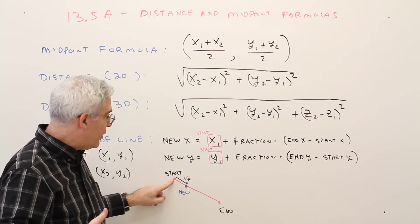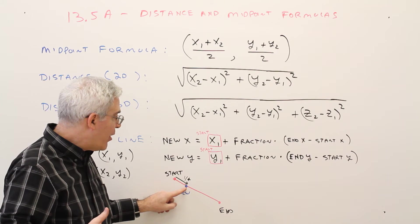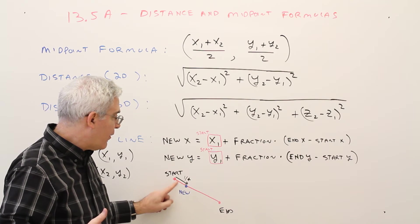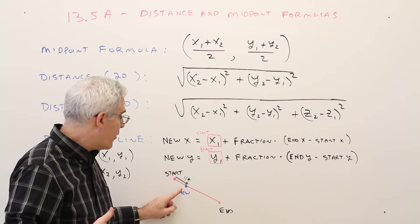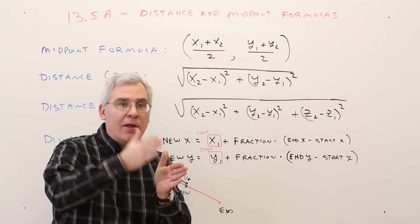So for example, let's suppose we start at this point, and we go one-fourth along the line. And I want to find out what the new coordinates are, the line segment. Okay? So it's very important you know where you're starting and where you're ending.